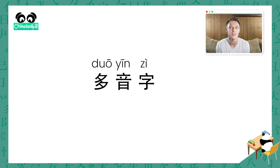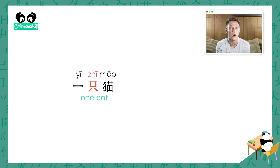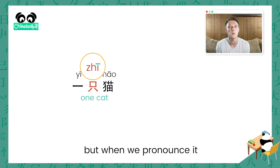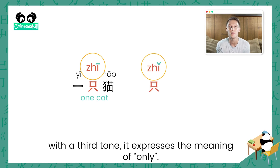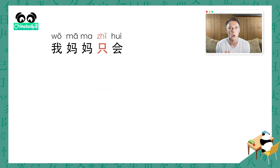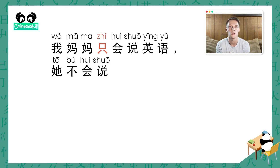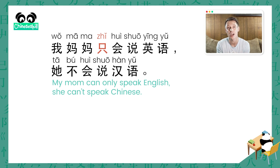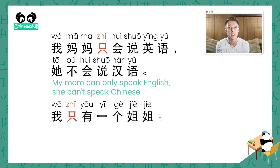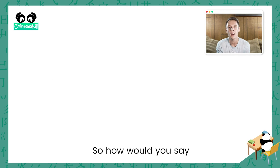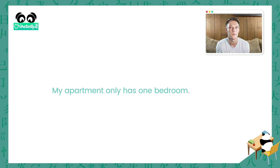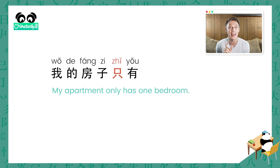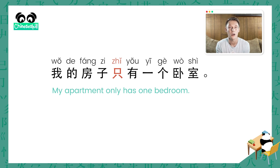Lastly, let's take our first look at a 多音字, a character with multiple pronunciations. When 只 is used as a measure word, like in 一隻貓 meaning one cat, it is pronounced with a first tone: 只. But when pronounced with a third tone, 只 expresses the meaning of 'only'. For example, 我媽媽只會說英語，她不會說漢語 — my mom can only speak English, she can't speak Chinese. Or 我只有一個姐姐 — I only have one older sister. So how would you say my apartment only has one bedroom? 我的房子只有一個臥室 — my apartment only has one bedroom.